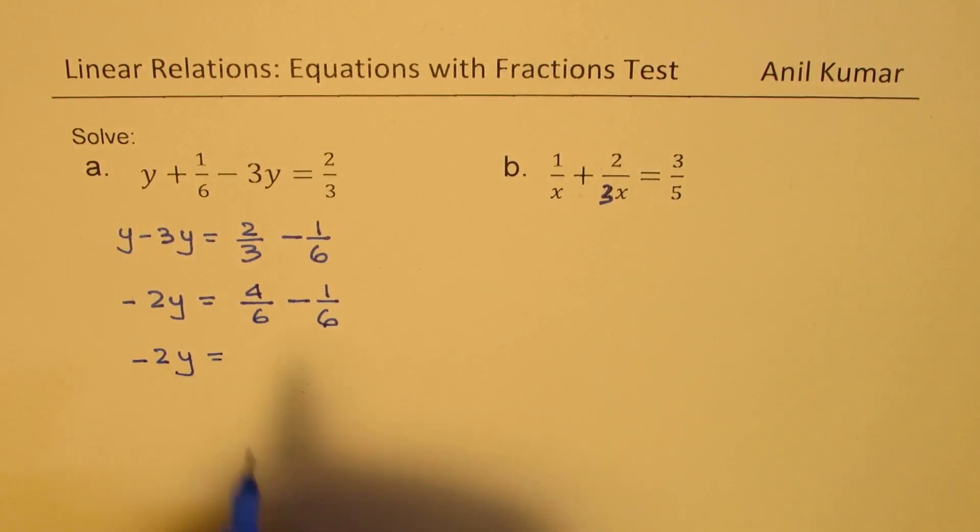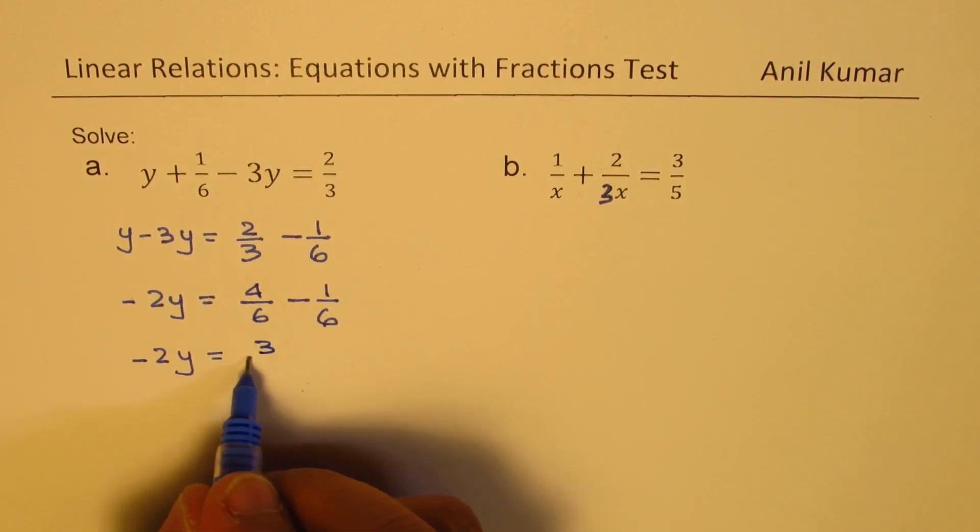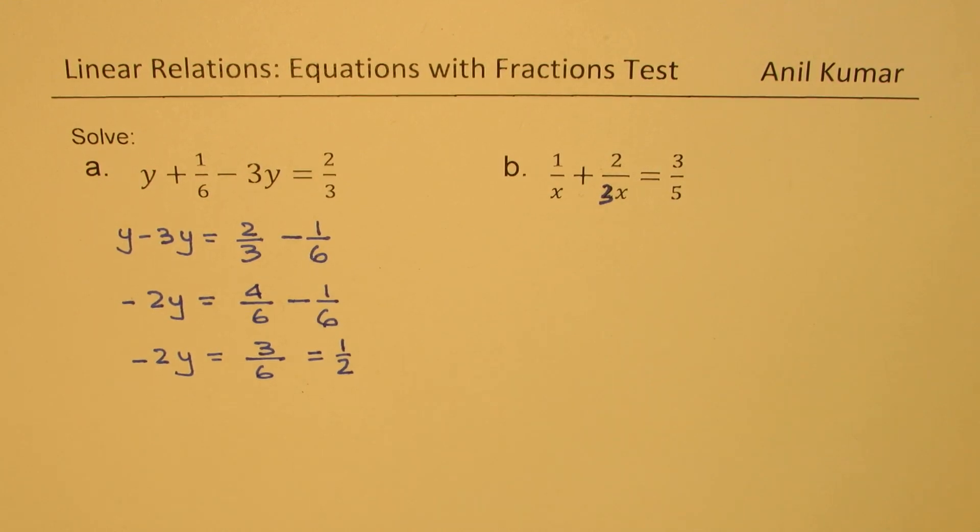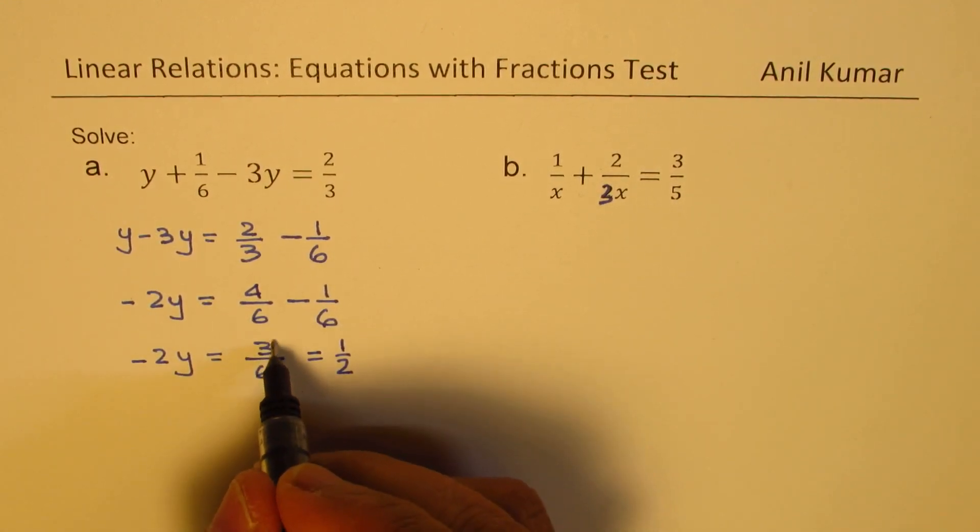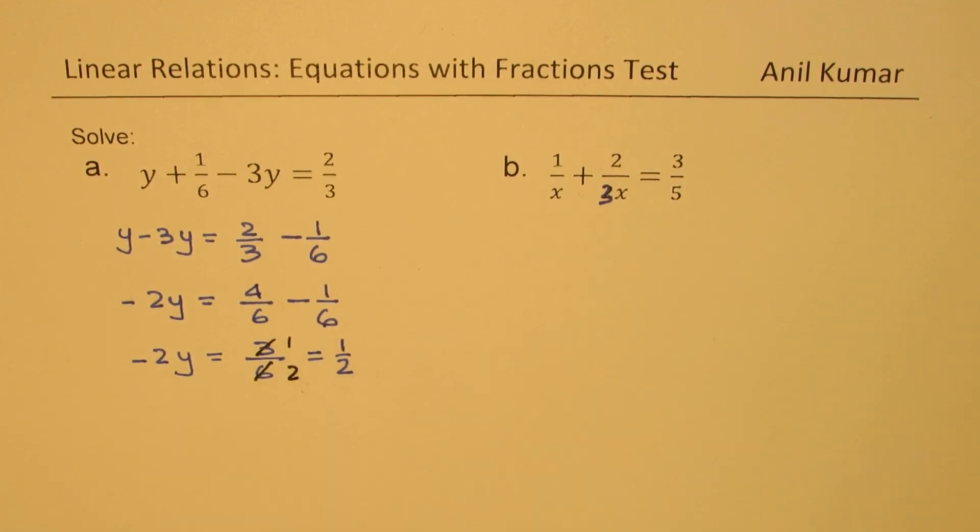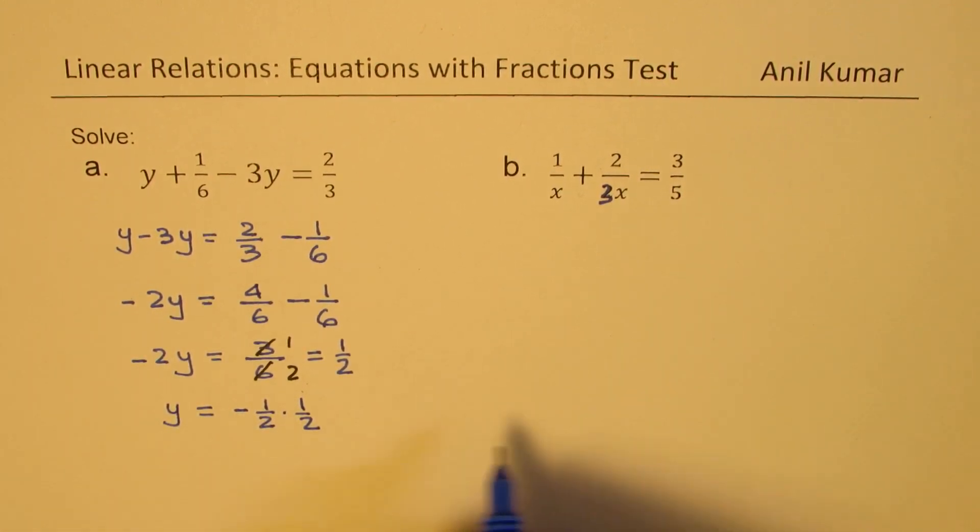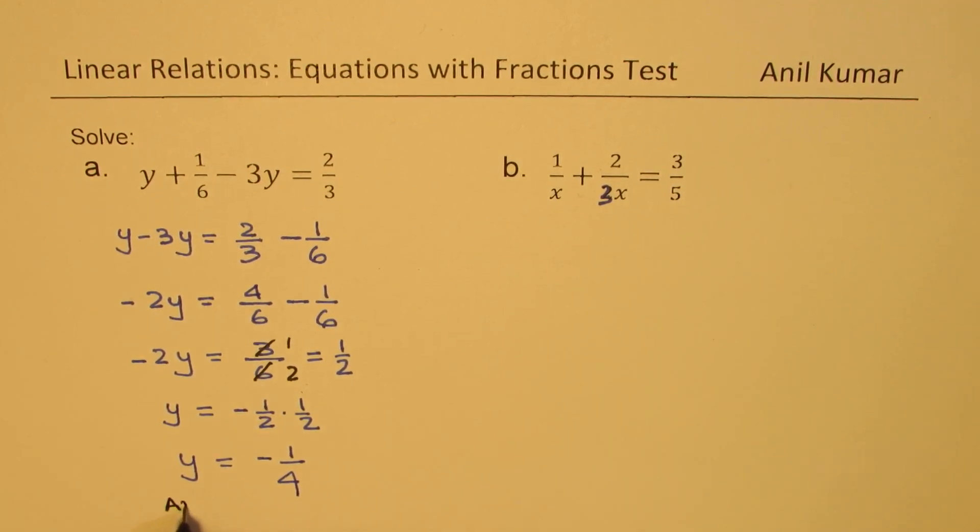So we have minus 2y equals 4 minus 1, which is 3, so we get 3 over 6. Now 3 over 6 can be written as 1 over 2. You can just cancel and simplify by 3, so we get 1 over 2 or half. From here, we get the value of y as equal to negative half times half, dividing by minus 2, which makes it negative. So we get y equals negative 1 over 4 as our answer.